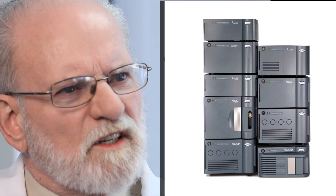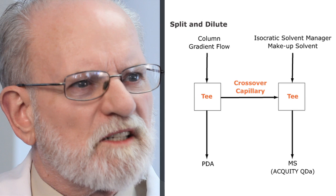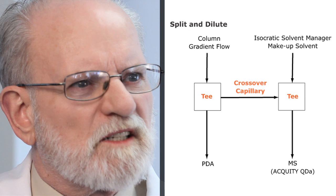The column flow is delivered to the two detectors through the isocratic solvent manager. A split and dilute technique ensures that both detectors are in their respective linear ranges.